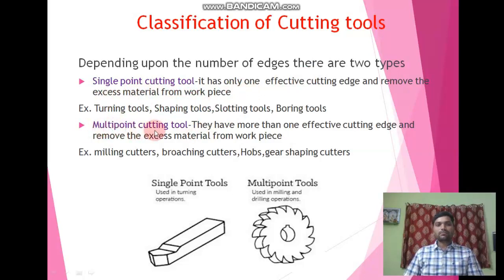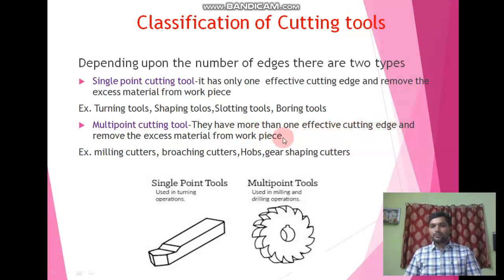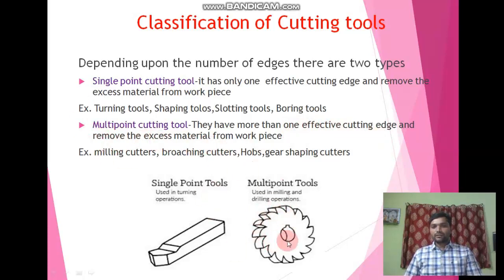The second type is the multi-point cutting tool. 'Multi' means more than one, so here we have more than one effective cutting edge, and with the help of those cutting edges we can remove excess material from the workpiece. Examples of multi-point cutting tools include milling cutters, broaching cutters, hobs, and gear shaping cutters.